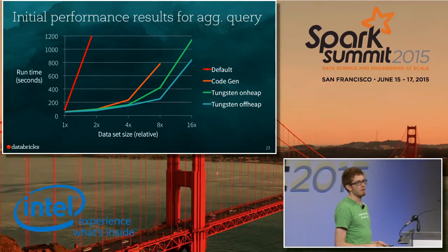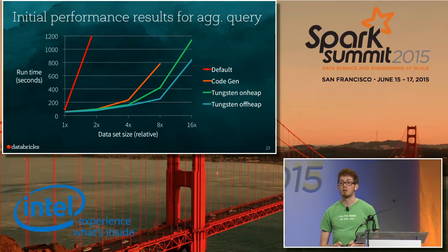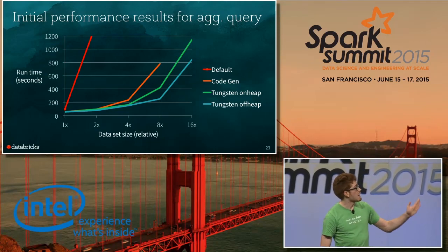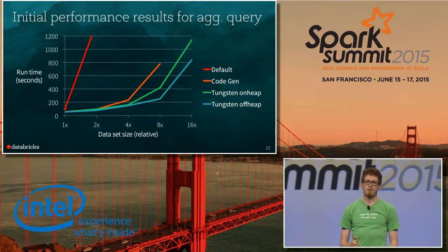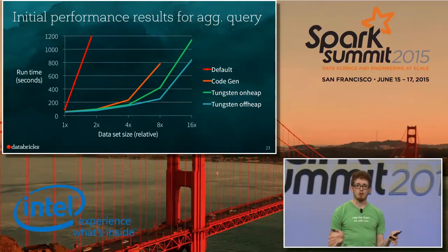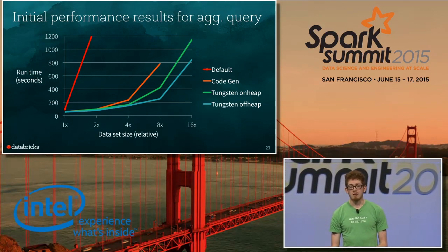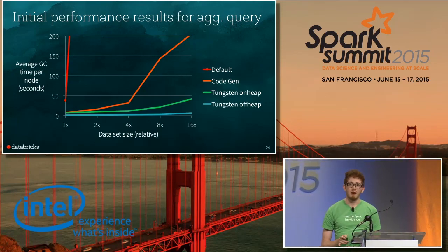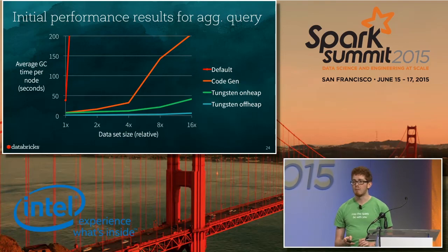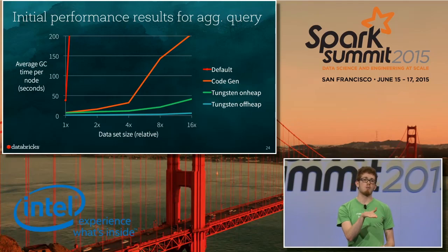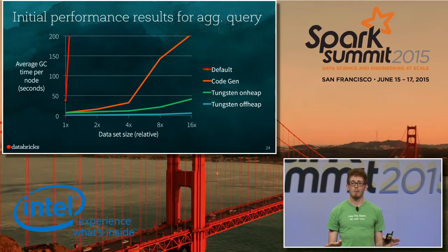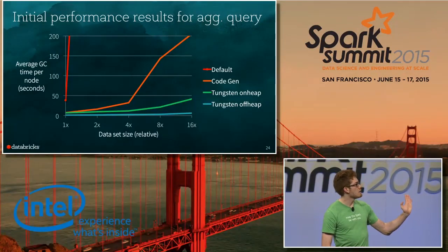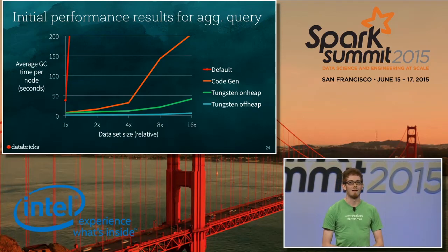Here are some initial performance results from running these optimizations on a customer workload using Spark SQL and DataFrames. On this graph, the x-axis shows relative dataset size and the y-axis shows runtime in seconds. The red line is Spark 1.4 default with code generation off — it shoots up vertically. Turning on code gen optimizations gives better scalability. Turning on the Tungsten optimizations gives significantly better query performance. A major reason is spending much less time on object creation and garbage collection. A second graph from the same benchmark shows GC time: Tungsten off-heap mode has virtually no garbage collection; even on-heap mode shows much, much less GC. In fact, the red line doesn't extend further because it ran out of memory trying to run a larger query.